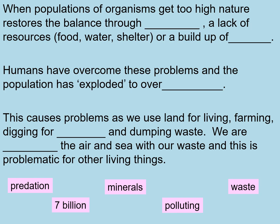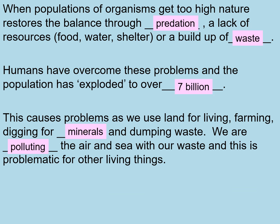Please write down these keynotes and fill in the gaps using the words at the bottom. Here are the answers: when populations of organisms get too high, nature restores the balance through predation, a lack of resources such as food, water and shelter, or a build-up of waste. Humans have overcome these problems and the population has exploded to over 7 billion. This causes problems as we use land for living, farming, digging for minerals, and dumping waste. We are polluting the air and the sea with our waste, and this is problematic for other living things.